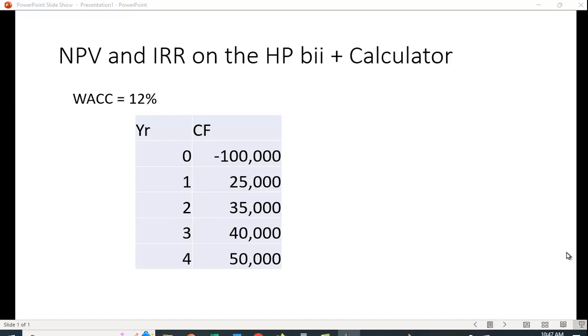Suppose you have the following cash flow. You have a project that costs $100,000 and it has cash flows of $25,000, $35,000, $40,000, and $50,000. Let's assume that the weighted average cost of capital is 12%.